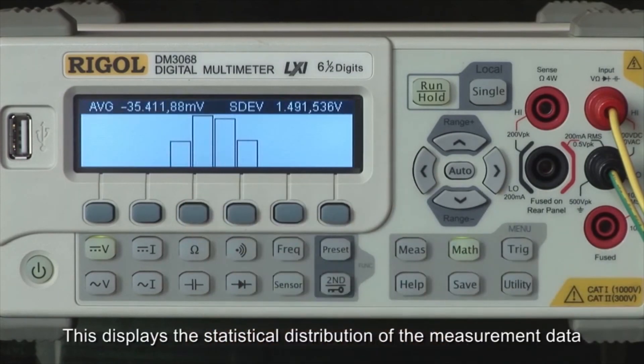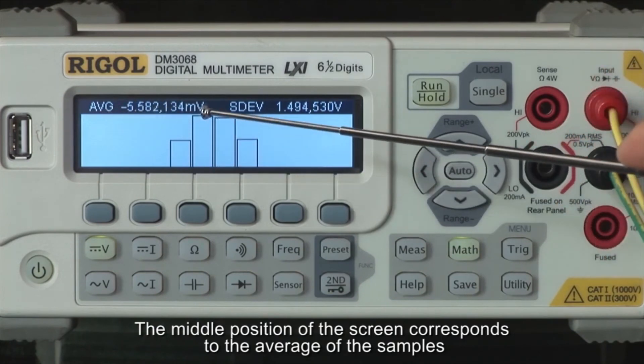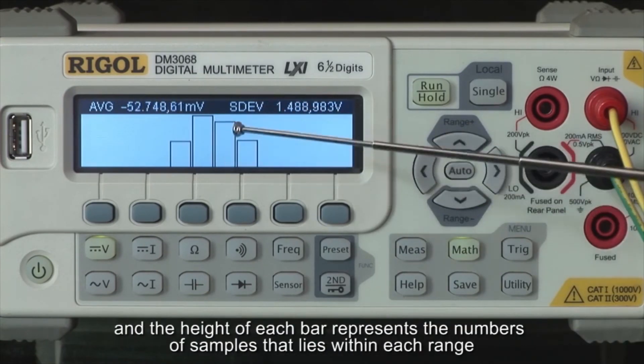This displays the statistical distribution of the measurement data. The middle position of the screen corresponds to the average of the samples, the width of the bar represents the standard deviation of the samples, and the height of each bar represents the number of samples that lie within each range.